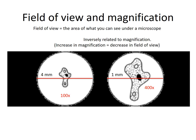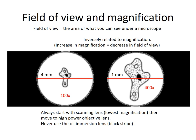Increasing the magnification is going to change your field of view. This is important because when we first put a slide onto our microscope, we always want to start looking at the specimen using the scanning lens — the objective lens with the lowest magnification. This gives us the greatest field of view and allows us to locate the specimen more easily. Once we locate the specimen, we can then increase the objective lens to a higher magnification.